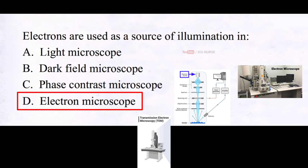Electron microscopes use electrons to make detailed images of tiny things. They are like superpowered microscopes with electron light instead of regular light.